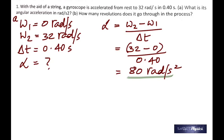When you calculate that, you get 80 radians per second squared.